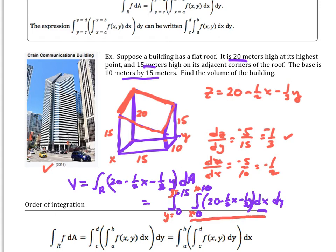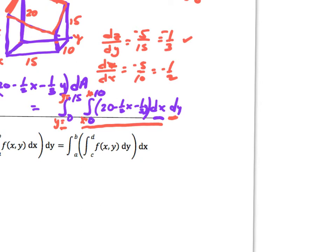The inner piece must be entirely in x. Taking the antiderivative with respect to x: 20 becomes 20x, the term (1/2)x becomes x²/4, and (1/3)y is a constant that just gets tagged with x, giving (1/3)yx. This is evaluated from x = 0 to x = 10.